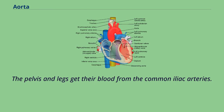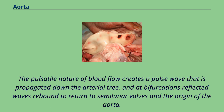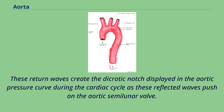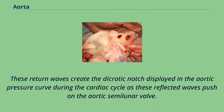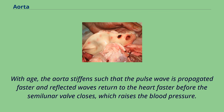The pulsatile nature of blood flow creates a pulse wave that is propagated down the arterial tree, and at bifurcations, reflected waves rebound to return to the semilunar valves and the origin of the aorta. These return waves create the dicrotic notch displayed in the aortic pressure curve during the cardiac cycle as these reflected waves push on the aortic semilunar valve. With age, the aorta stiffens such that the pulse wave is propagated faster and reflected waves return to the heart faster before the semilunar valve closes, which raises the blood pressure.